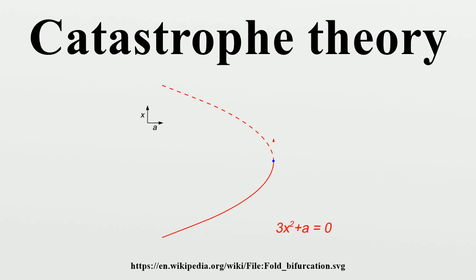Catastrophe theory originated with the work of the French mathematician René Thom in the 1960s and became very popular due to the efforts of Christopher Zeeman in the 1970s. Small changes in certain parameters of a nonlinear system can cause equilibria to appear or disappear, or to change from attracting to repelling and vice versa, leading to large and sudden changes of the behavior of the system.